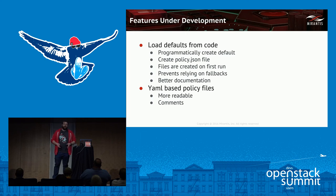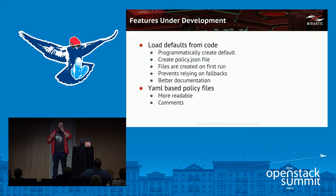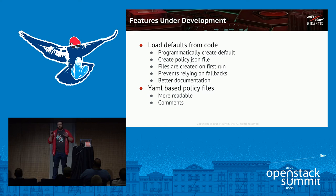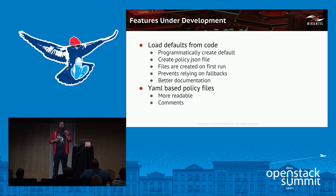What's happening in the community today? The Oslo team are doing a lot of work along with the Keystone team to programmatically create defaults and the default rule sets for the JSON. The way this is going to be handled — within each API call there will be a default JSON or policy call which can be read out and create the policy file automatically. The advantage of that is you know you're always going to have the same defaults — it's not somebody's bad copy and paste.